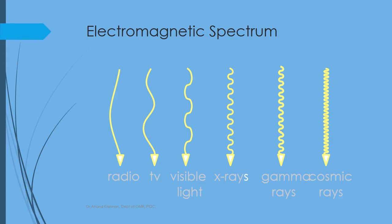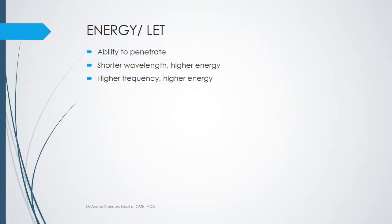That is why when you take a flight, you are exposed to more cosmic radiation. In fact, a detailed flight itinerary may show how much radiation you're exposed to during that journey. The higher you go in the atmosphere, the more radiation you receive. In our topic, x-rays fall under electromagnetic radiation — not particulate radiation.